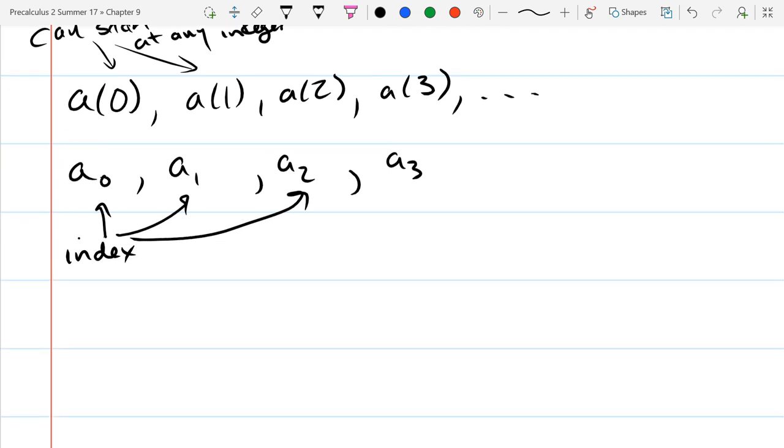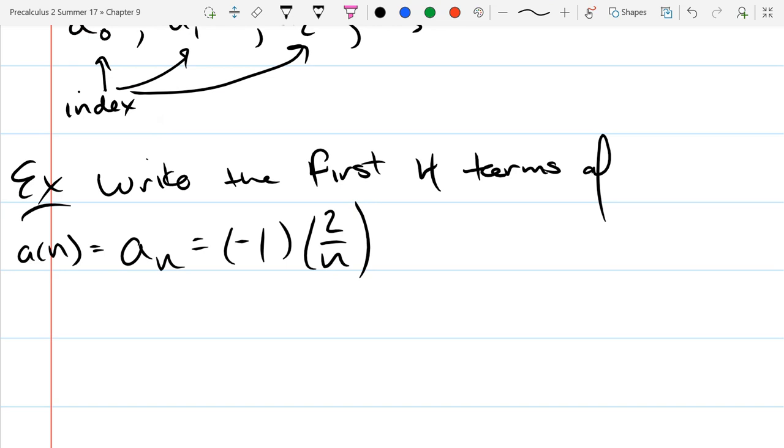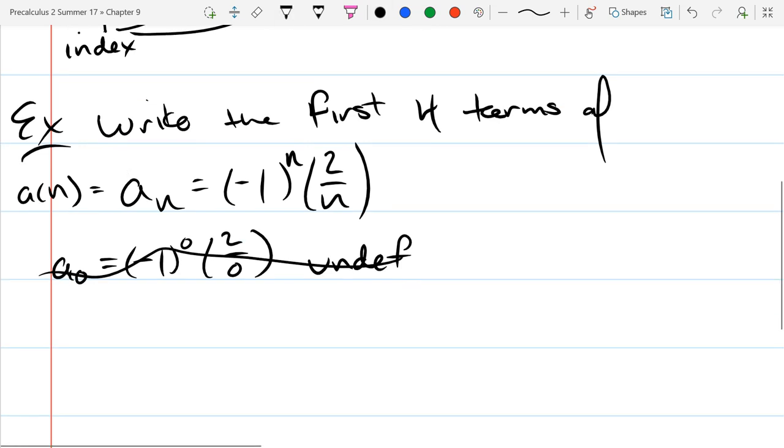Write the first four terms of, and I'll use the subscript notation, you could still use function notation if that works better for you. So this an is going to be negative 1 to the n power times 2 over n, I want the first four terms, and we'll start at 0. So you got negative 1 to the 0 power, which is 1, and we got 2 over 0, so this is undefined. So this sequence is not going to start at 0, so forget that there is no 0 term, we'll start at 1.